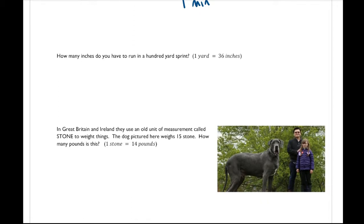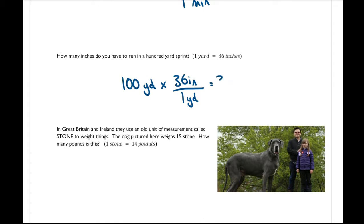Next: how many inches do you have to run in a 100-yard sprint? We start with 100 yards and multiply by our unit rate. The units we want — inches — go on top: 36 inches over 1 yard. The yards cancel, and we get 100 times 36, which is 3,600 inches.